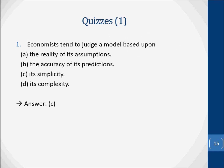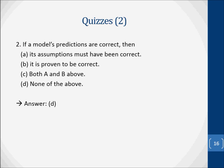Now let's do some quizzes. Question one: economists tend to judge a model based upon — A. the reality of its assumptions, B. the accuracy of its predictions, C. its simplicity, or D. its complexity. The answer is C — economists tend to judge a model based upon its simplicity. Question two: if a model's predictions are correct, then — A. its assumptions must have been correct, B. it is proven to be correct, C. both A and B, or D. none of the above. The answer is D — none of the above.